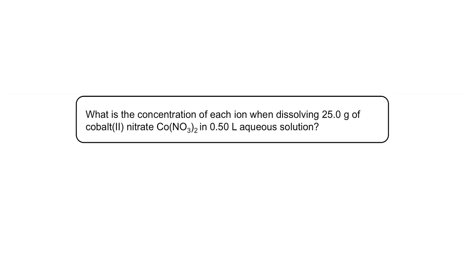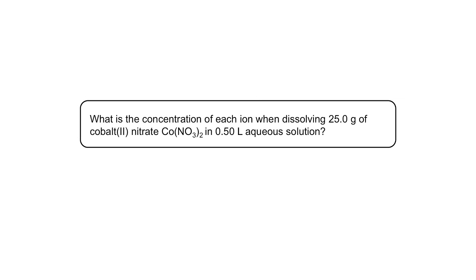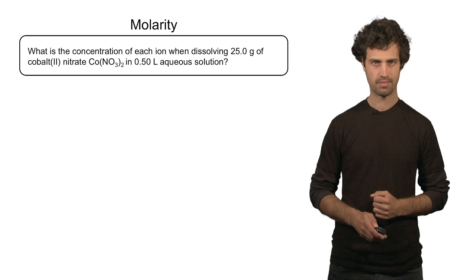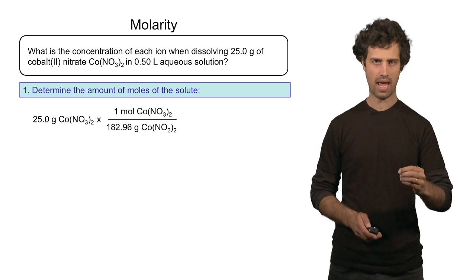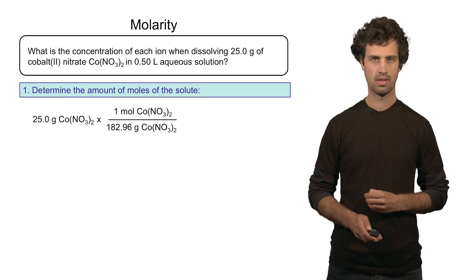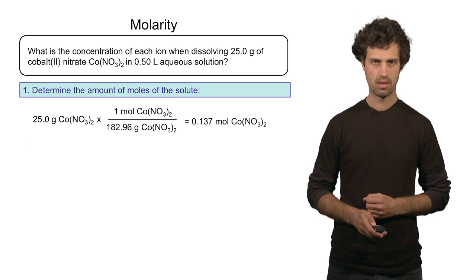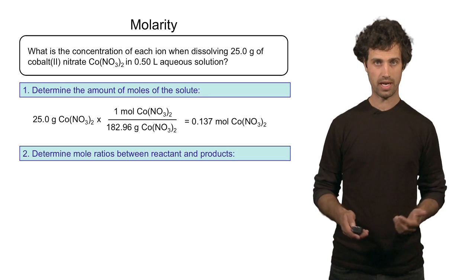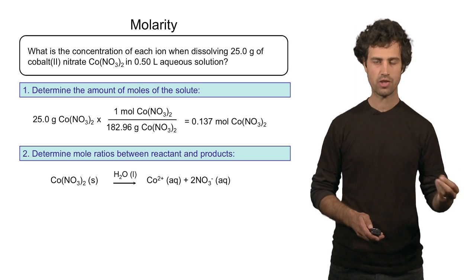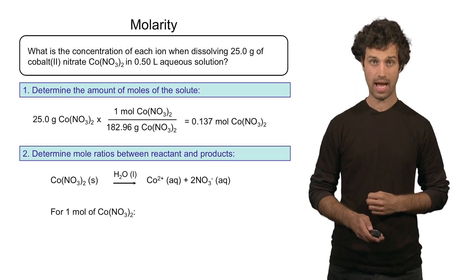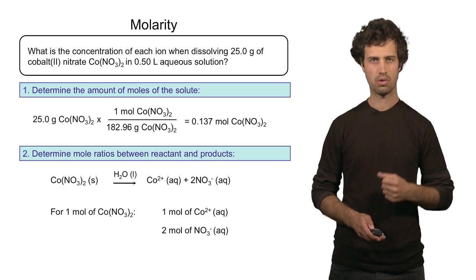In the next example, we are looking at dissolving a salt in water. The salt here is cobalt-2 nitrate. The question is: can we calculate the concentration of the cations and the anions after complete dissolution? First, we determine the number of moles of the compound. With 25 grams of cobalt-2 nitrate, dividing by the molar mass gives a total of 0.137 moles. Cobalt-2 nitrate generates cobalt cations and nitrate anions — for each one mole of cobalt-2 nitrate, we generate one mole of cobalt cations and two moles of nitrate anions.